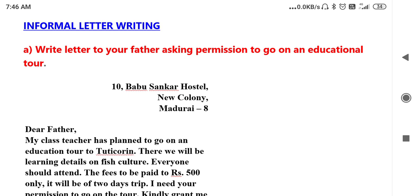Formal letters are written to your class teacher, any teachers, principal, and government officials. Informal letters are written to your parents, friends, relatives, neighbors — all those who are in your personal zone.